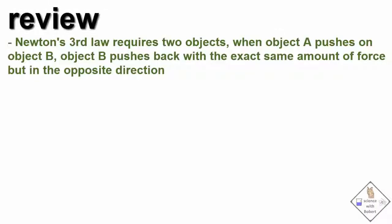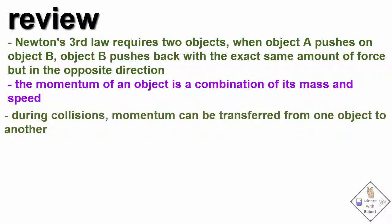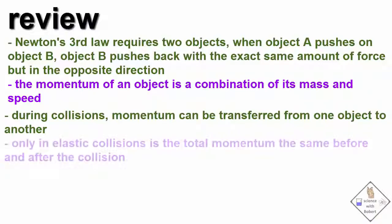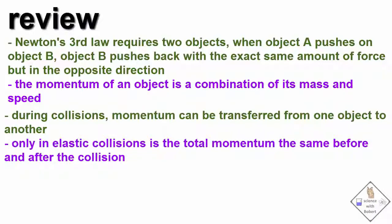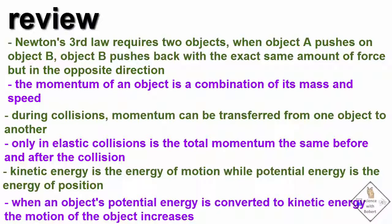Let's review. Newton's Third Law requires two objects — when object A pushes on object B, object B pushes back with the exact same amount of force. The momentum of an object is a combination of its mass and speed. During collisions, momentum can be transferred from one object to another. Only in elastic collisions is the total momentum the same before and after the collision. Kinetic energy is the energy of motion, while potential energy is the energy of position. When potential energy gets converted to kinetic energy, speed increases.